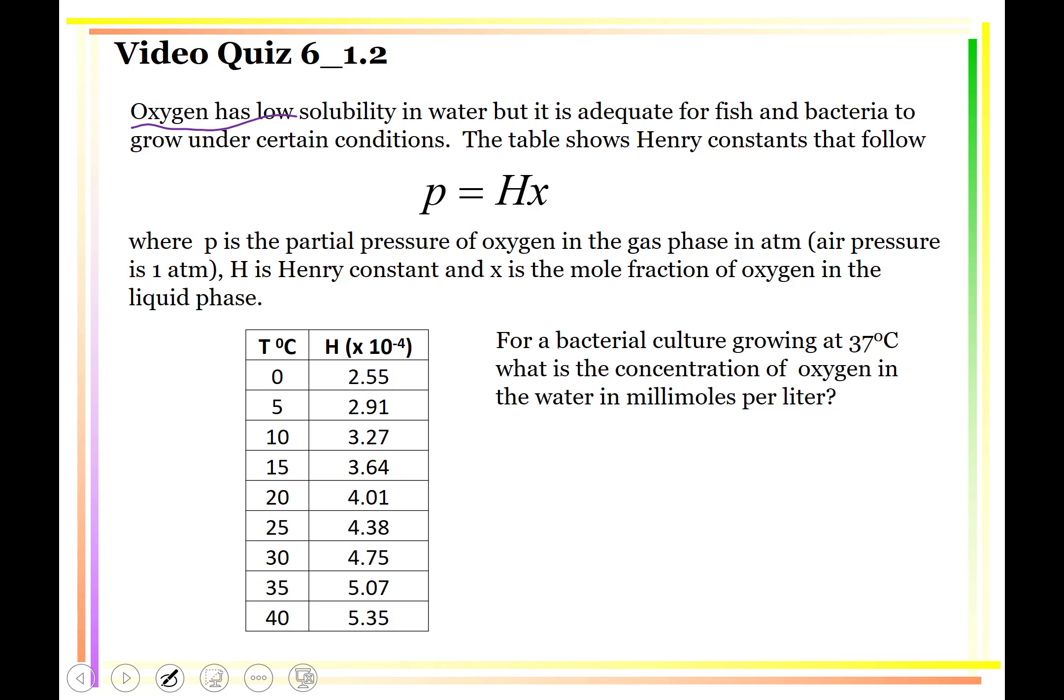Again, we're going to talk about a bacterial fermentation growing at 37 degrees C. The air pressure, the system pressure, is 1 atmosphere. And if you look at the video quiz, I walk you through the different steps of the calculation. Ultimately, you should be able to calculate the concentration of oxygen in the water in millimoles per liter.